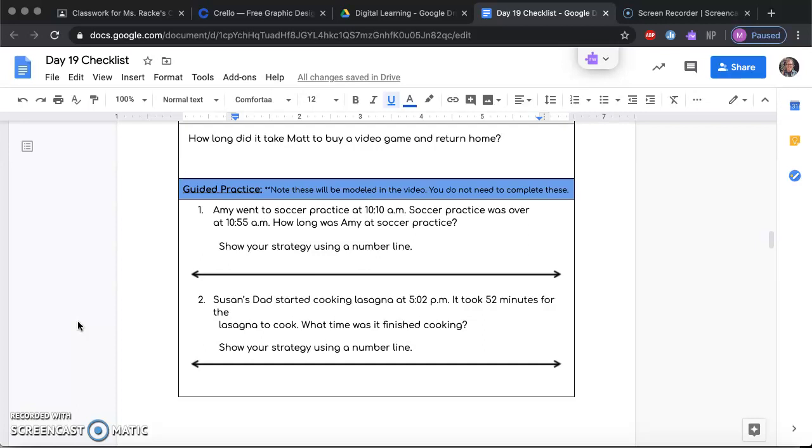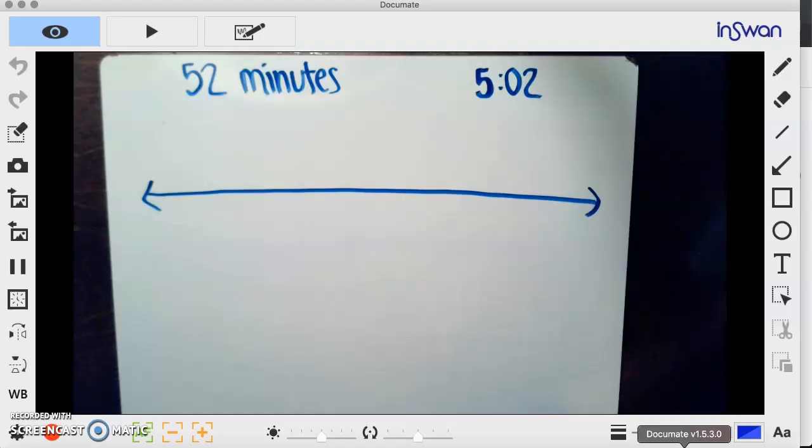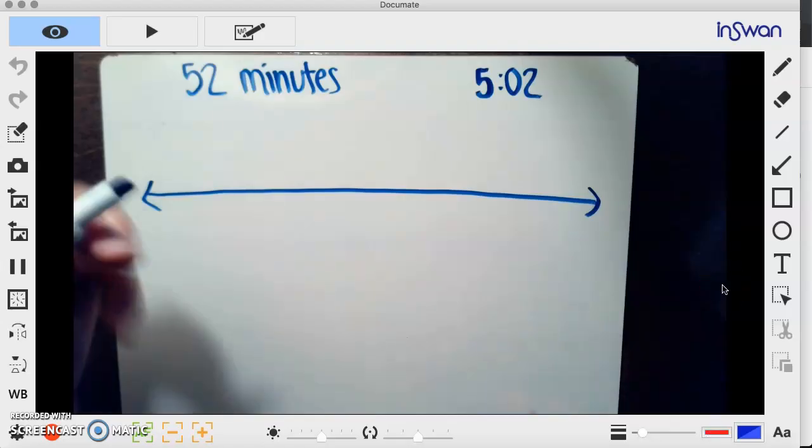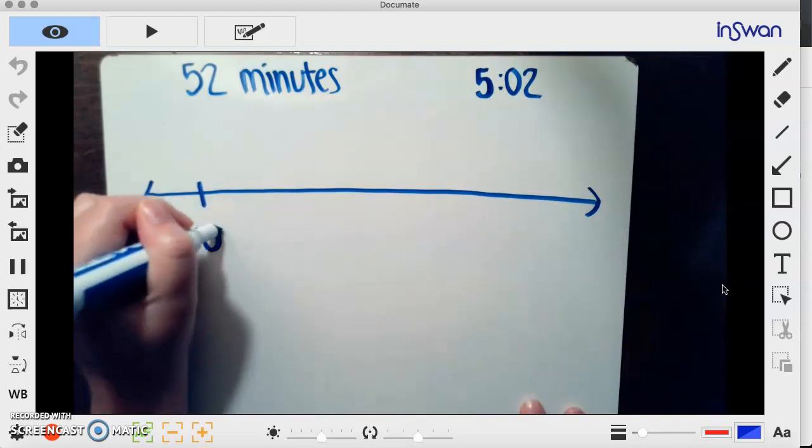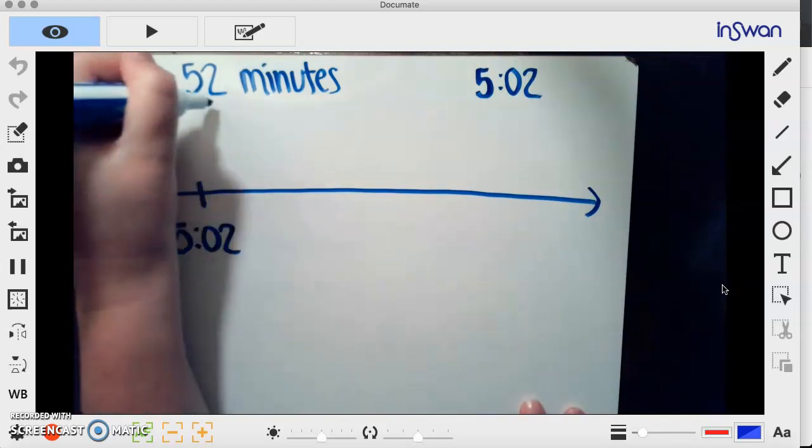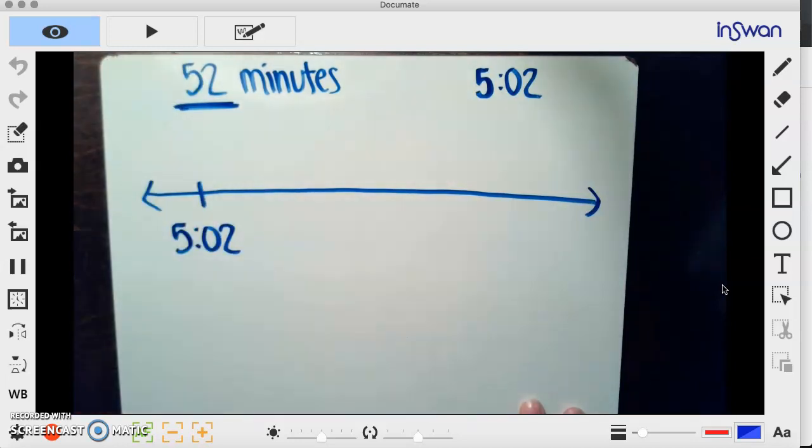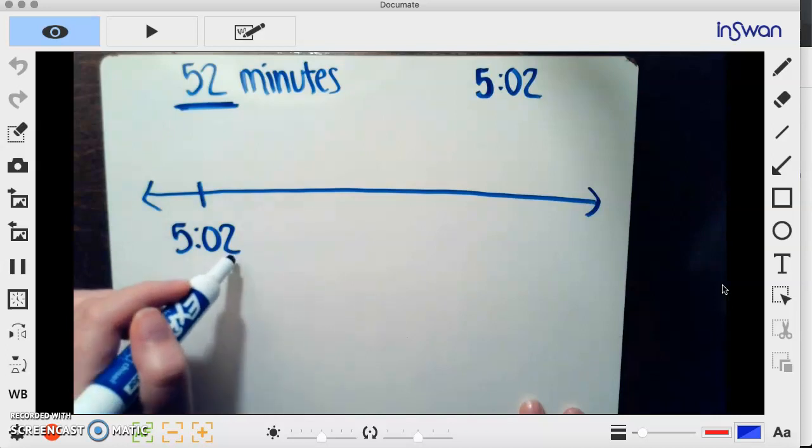So this one looks a little bit different than the others that we have been solving, because our unknown is what time he finished cooking his lasagna. We know what time he started—5:02—and we know how long it took for the lasagna to cook. So I'm going to start right here at 5:02.